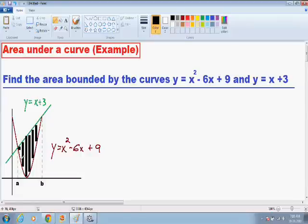So in order to find out where they are touching, the only thing you need to do is set the curves equal to each other. So our first curve is x squared minus 6x plus 9. And we need to set that equal to our second curve, which is x plus 3.